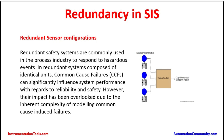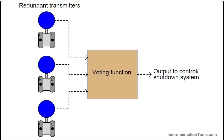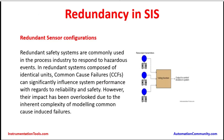Redundant sensor configurations: redundant safety systems are commonly used in the process industry to respond to hazardous events. In redundant systems composed of identical units, common cause failures — CCF — can significantly influence the system performance with regards to reliability and safety. However, their impact has been overlooked due to the inherent complexity of modeling common cause induced failures.